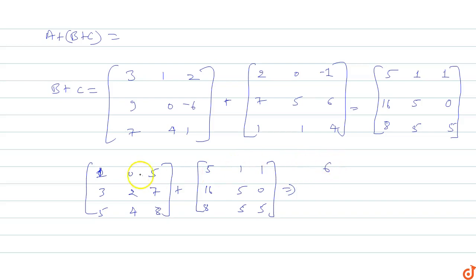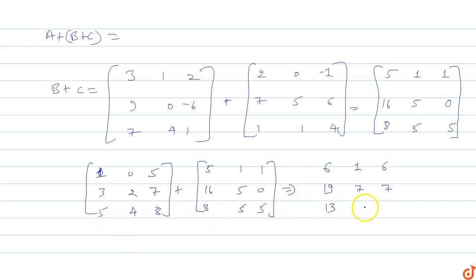A + (B + C) gives: 1+5=6, 0+1=1, 5+1=6, 3+16=19, 2+5=7, 7+0=7, 5+8=13, 4+5=9, 8+5=13. So A + (B + C) matrix is 6 1 6 / 19 7 7 / 13 9 13.